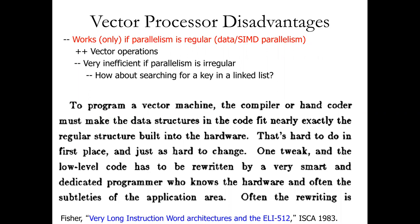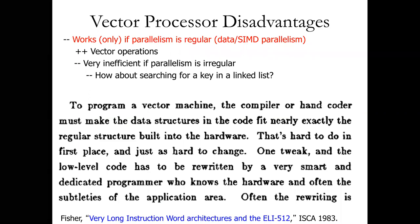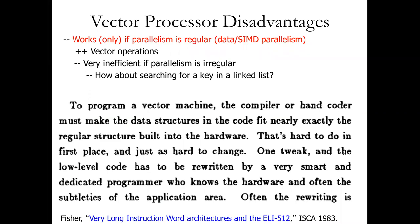This only works if our data is regular — basically if we just have an array. If we have something more random it's going to be a lot more difficult. For example, searching for a key in a linked list — there are so many variations: you might get a cache miss in the middle, you might have a bunch of different branches. So there are disadvantages; it's only applicable to a certain set of situations.